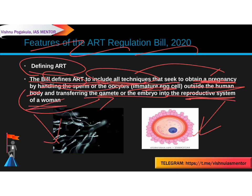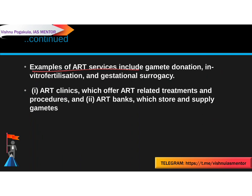Examples of ART services include: gamete donation — donating the sperm or oocyte; in vitro fertilization — fertilizing an egg in the lab; and gestational surrogacy — where the child is not biologically related to the surrogate mother. Another woman carries the baby for a couple, and after she gives birth, the child is given to the couple who are in need.